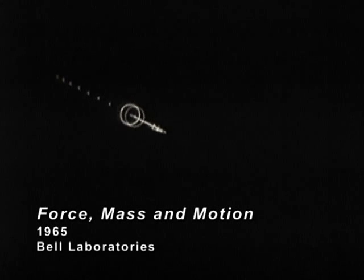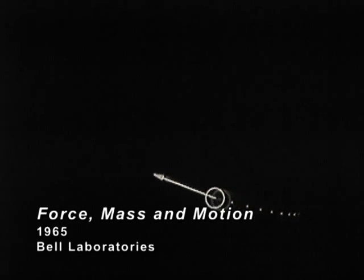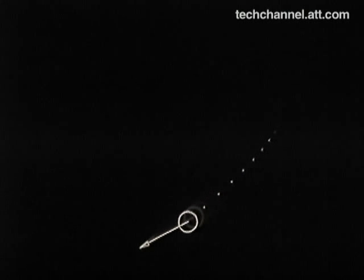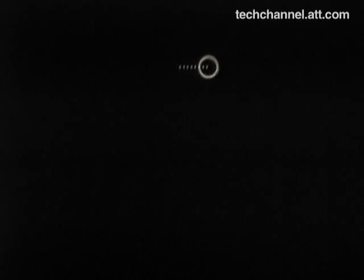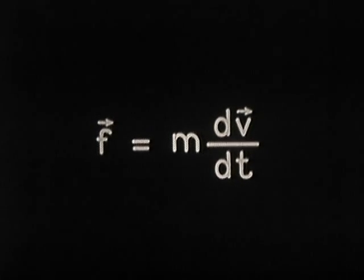This represents a massive body being pushed about by a force, just as a vehicle in free space might be pushed about by its rockets. The size of the circle shows the mass, and the length of the arrow shows the strength of the force. Newton's law links force, mass, and motion.